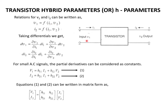Input voltage V1 can be written as F of I1, V2, and output current I2 can be written as F of I1, V2. Taking the differentials of these equations, we get: dV1 = (∂V1/∂I1)·dI1 + (∂V1/∂V2)·dV2. Similarly, dI2 = (∂I2/∂I1)·dI1 + (∂I2/∂V2)·dV2.